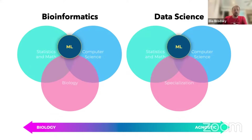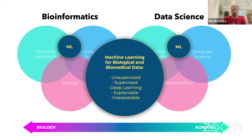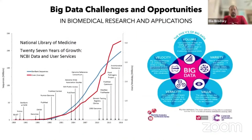Somewhere in the middle of both of these sits the term machine learning. We actually want to incorporate machine learning because, when it is properly applied to the right kind of question, the right kind of data, and is interpretable, it makes it useful for biological and biomedical discovery. Today we'll briefly talk about tools like supervised and unsupervised learning, and speak about some of the differences between deep learning and machine learning as well.